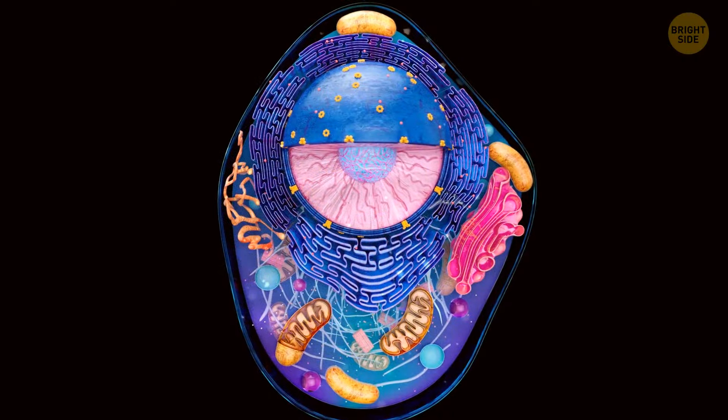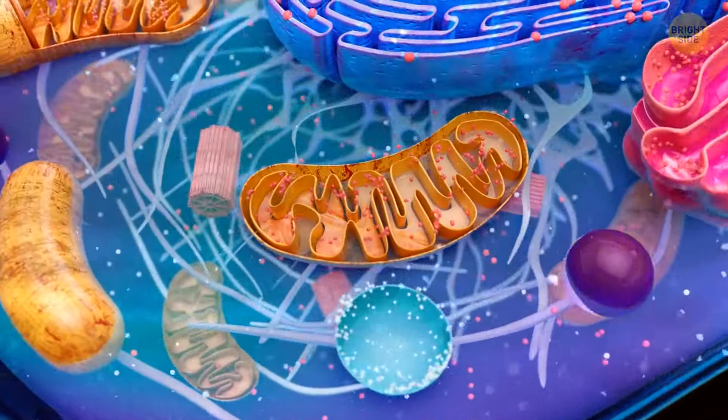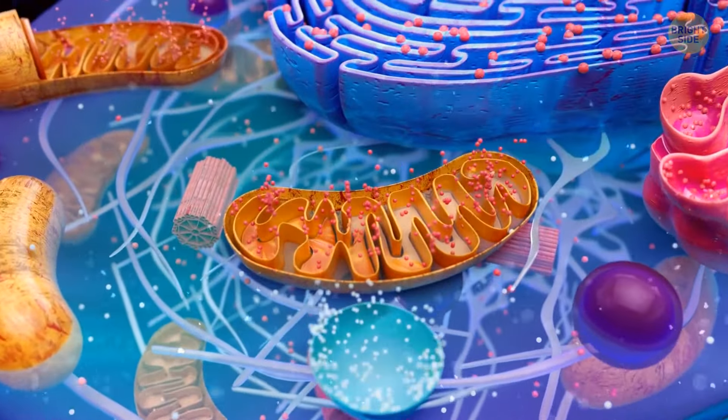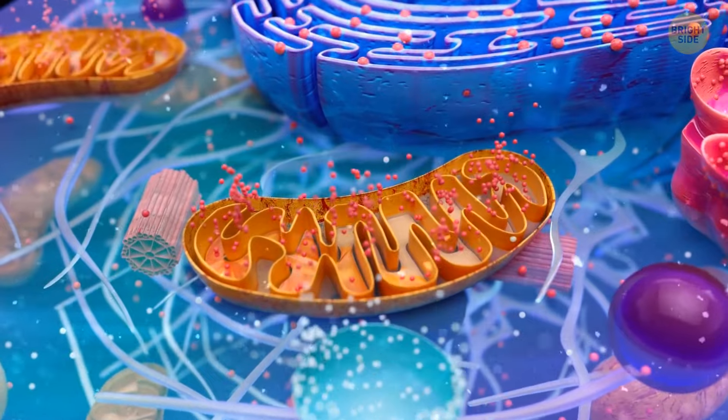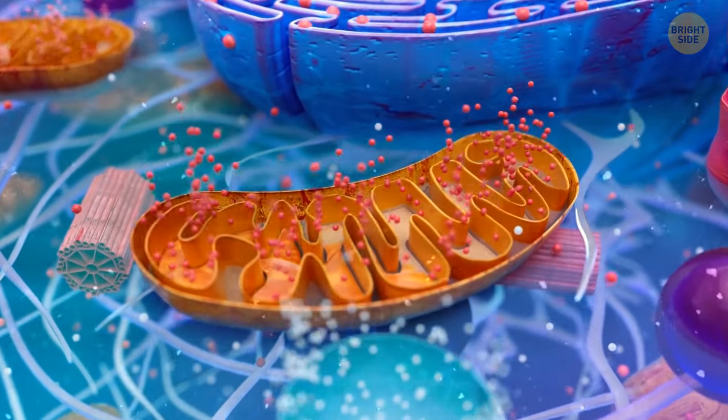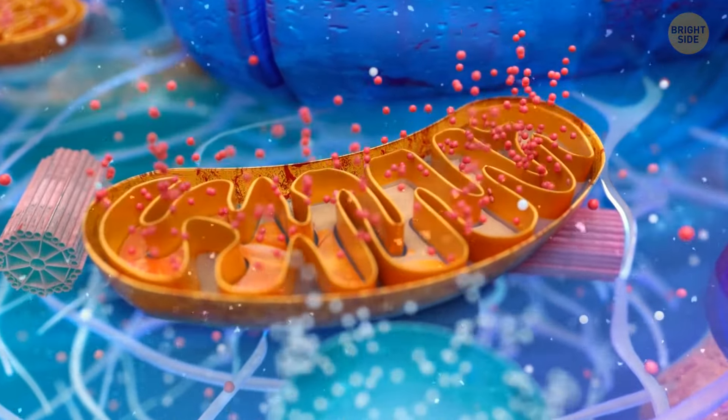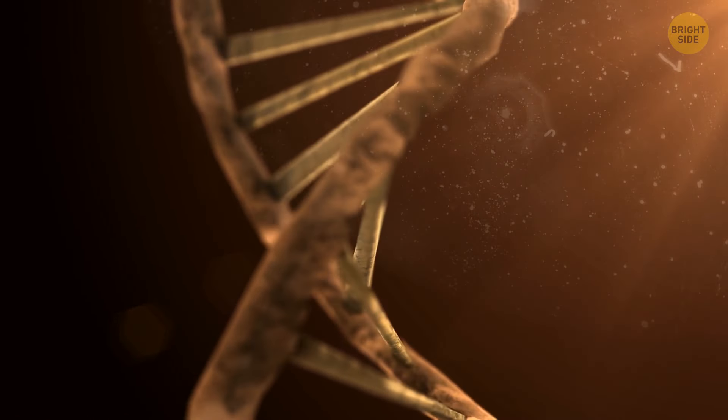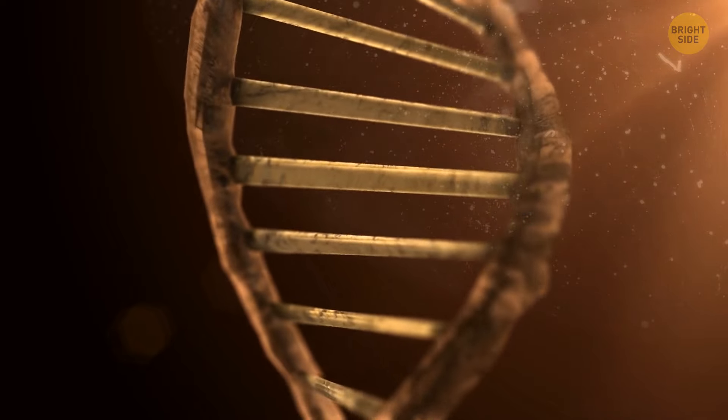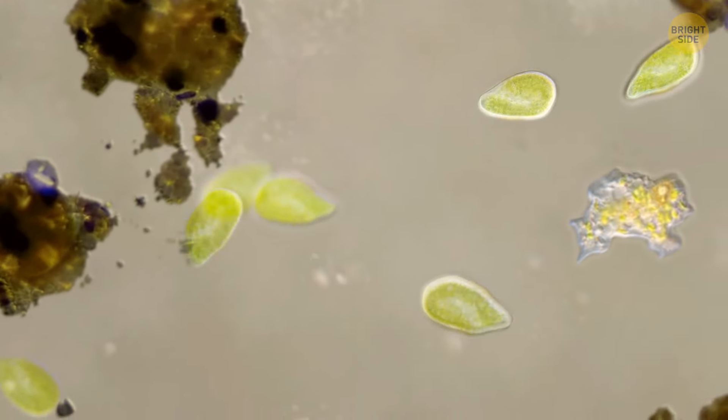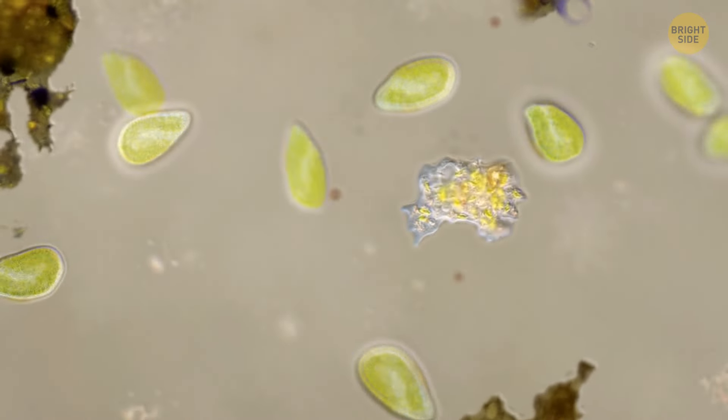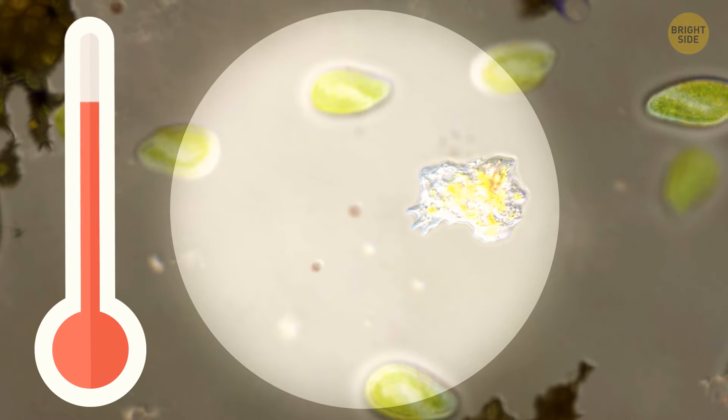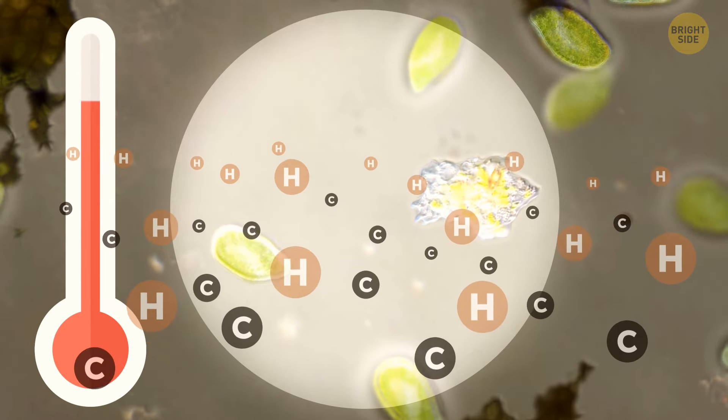There are also some backup generators with fancy names like thio esters, acyl phosphates, and reduced ferredoxin. They basically work like extra boosts. When life first started, it needed energy to make complex stuff like proteins and DNA. Back then, this energy came from the environment. It could be light, heat, chemicals, or even lightning.